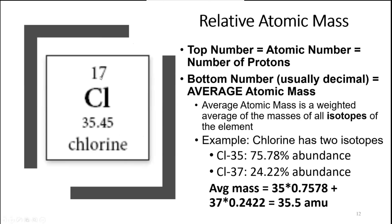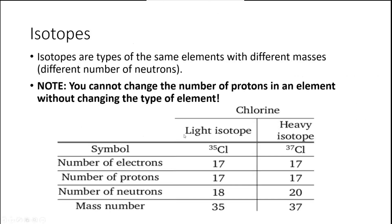Here's the periodic table. The top number is the atomic number, which is the number of protons — very important. Every atom of chlorine has 17 protons; if it has 18 or 16 protons, it's not chlorine. In the middle is the element symbol. The bottom decimal number is the average atomic mass — the weighted average across all isotopes. Chlorine has two isotopes: chlorine-35 (75% natural abundance) and chlorine-37 (25% natural abundance), giving a weighted average atomic mass of 35.45.